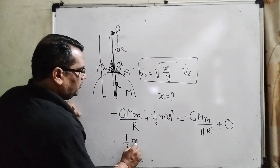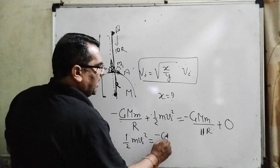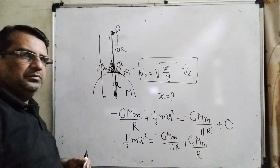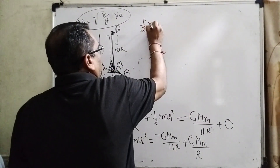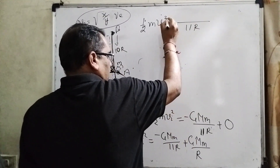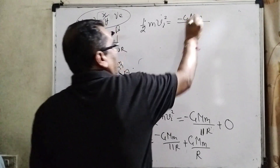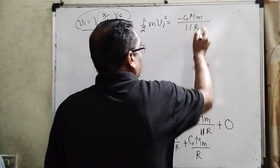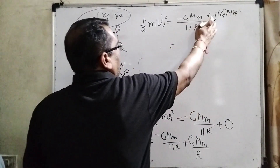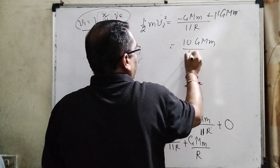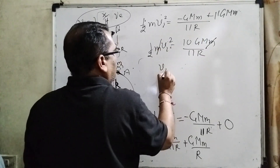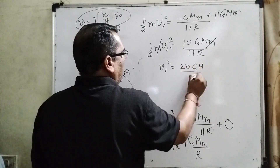Transposing the potential energy term to the right side, it becomes positive: GMm/R. So we have (1/2)m·Vi squared equals GMm/R minus GMm/11R. Taking LCM as 11R, this becomes (11GMm minus GMm) over 11R, which gives 10GMm over 11R. So (1/2)m·Vi squared equals 10GMm/11R. Small m cancels out, so Vi squared equals 20GM over 11R.